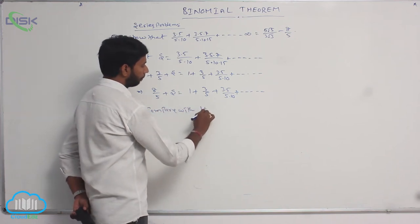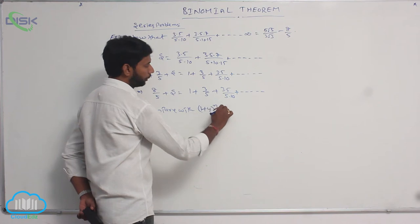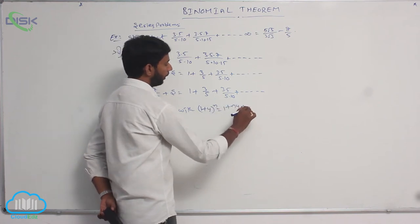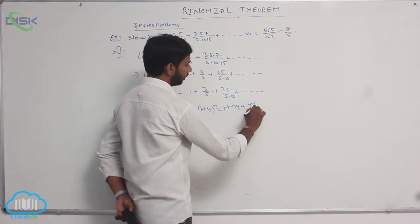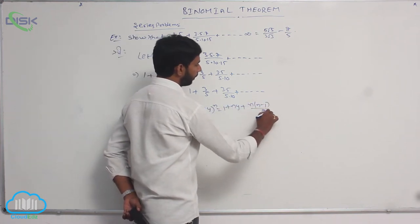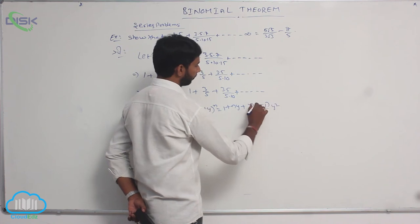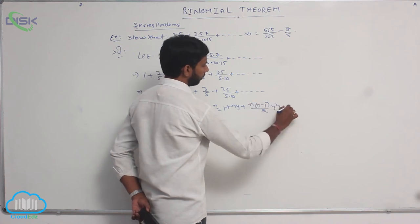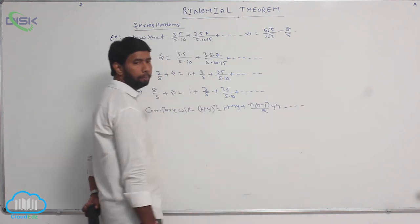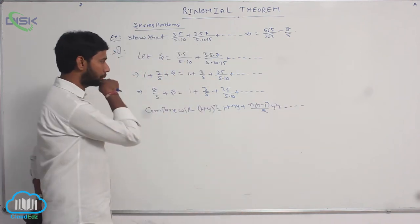Compare with the binomial expansion (1 + y)^n = 1 + ny + n(n-1)/2 · y² + ... and so on.